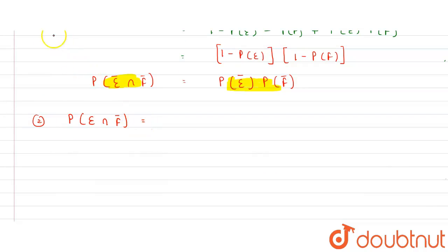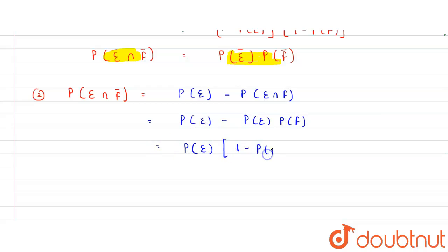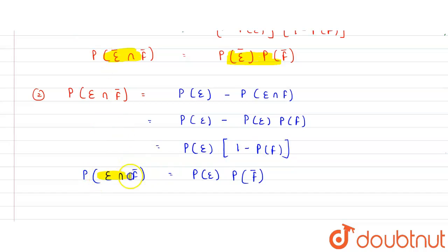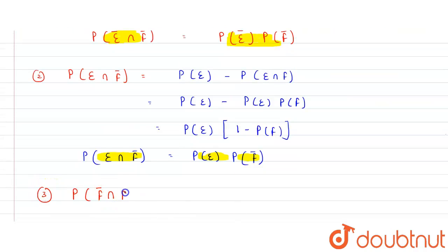For the second option, we check whether E and F complement are independent. P(E ∩ F') = P(E) - P(E ∩ F). Since E and F are independent, P(E ∩ F) = P(E)·P(F). Taking P(E) common gives P(E)·(1 - P(F)) = P(E)·P(F'). So P(E ∩ F') = P(E)·P(F'), meaning E and F' are independent.